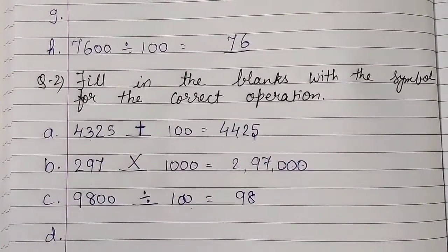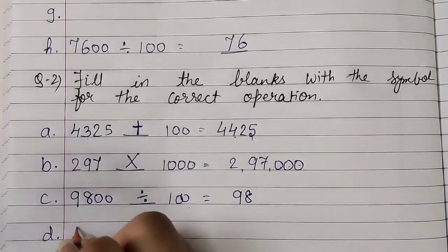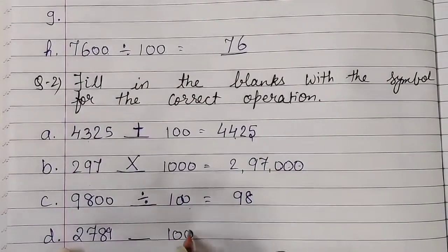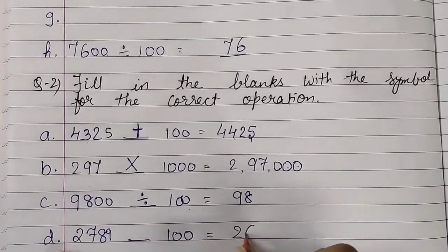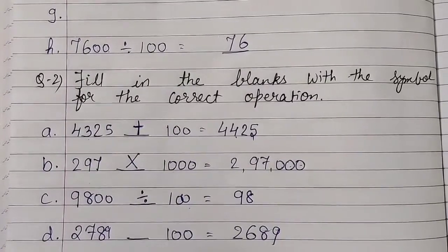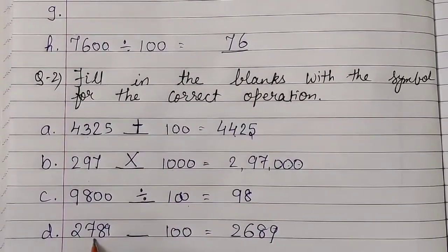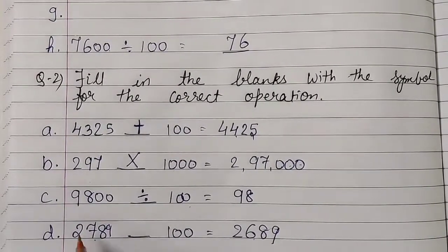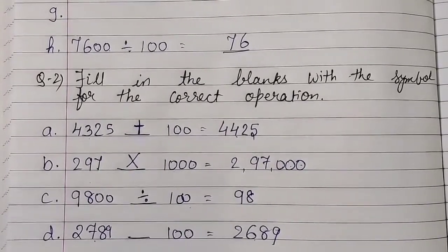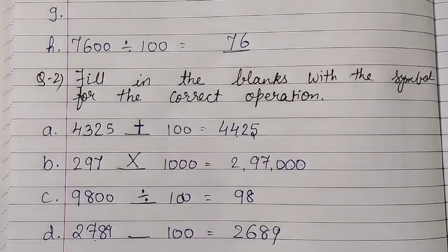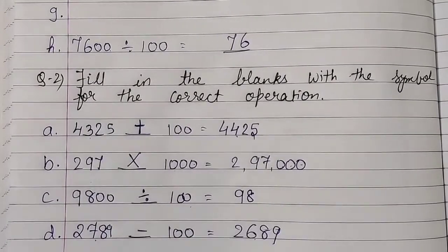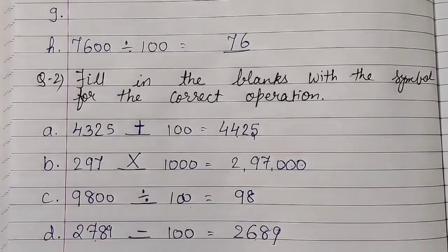Number (d): 2,789 blank 100 equals 2,689. We check the hundreds place: here it is 7, and in the answer it is 6 — something decreased. 7 became 6, meaning 1 hundred was subtracted. So the sign is minus.